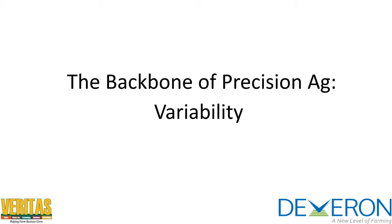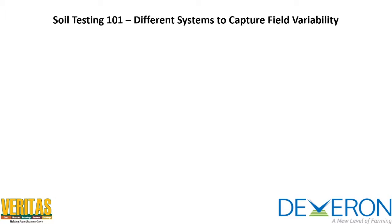This video is going to talk about a tool that we've built to answer that question — how much variability do you have, and is it enough that you're going to have to consider precision ag to truly get the most out of your production system? Most people in the precision ag space will tell you the most important layer to get things started is a good soil test layer. There are a whole bunch of different systems out there, and we're going to go over some of them and how Veritas looks at these different systems to determine how much variability is actually there.